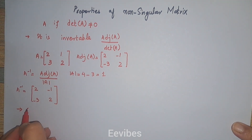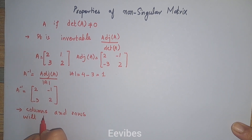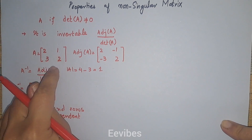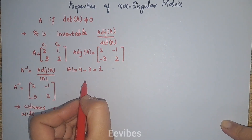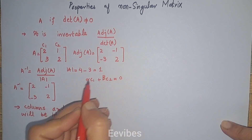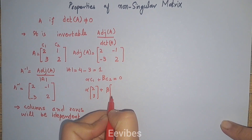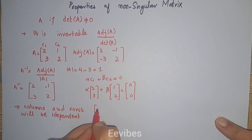The next property is that the columns and rows will be linearly independent. By independent we mean that none of the columns or rows are non-zero scalar multiples of each other. Considering column 1 and column 2, we try to find scalars alpha and beta such that alpha times C1 plus beta times C2 equals zero. So alpha times [2, 3] plus beta times [1, 2] should equal [0, 0].